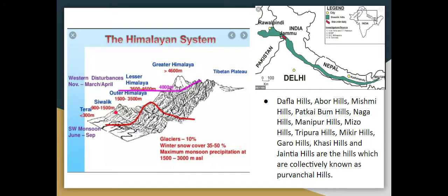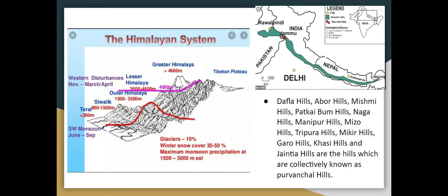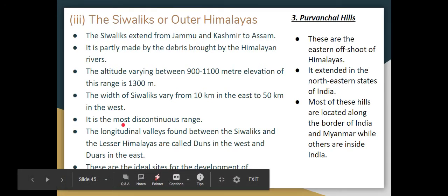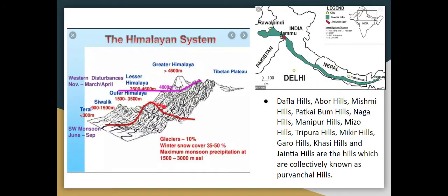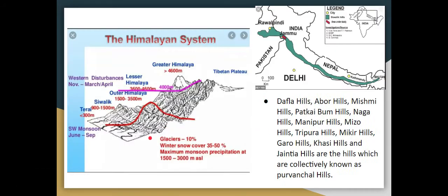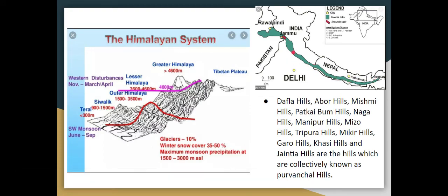The Shivalik range has a height of 900 to 1000 meters, up to 1300 meters. The width is 50 km in the west and 10 km in the east. This is a discontinuous range. It has longitudinal valleys — for example, the Doon Valley — in the west and Dwar in the east.